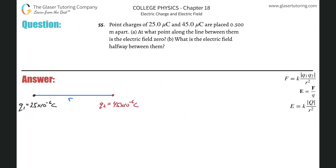Number 55. Point charges of 25 microcoulombs and 45 microcoulombs are placed 0.5 meters apart. Letter A: at what point along the line between them is the electric field zero? And then letter B: what is the electric field halfway between them?